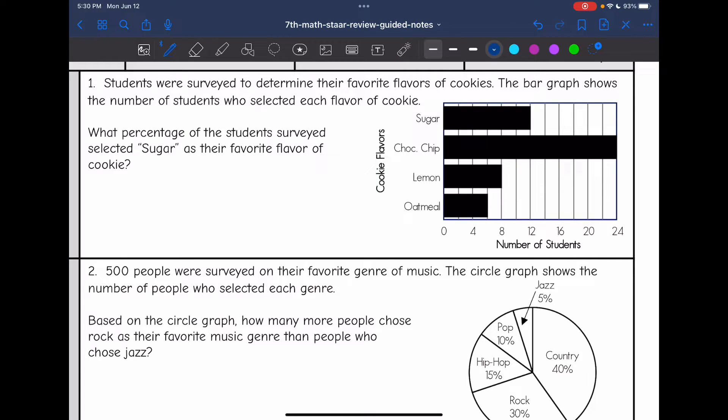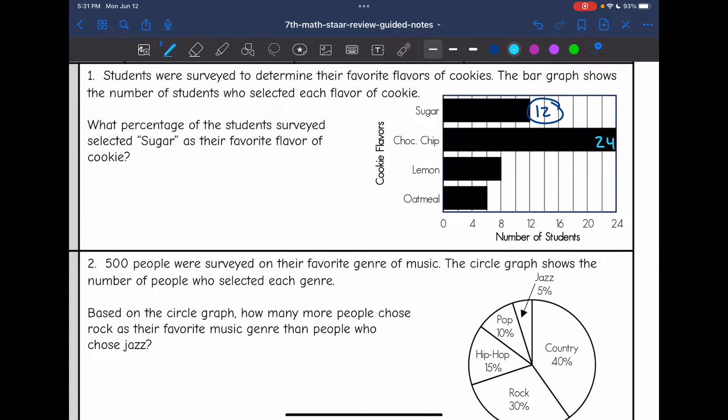So it looks like 12 people selected sugar as their favorite cookie. I don't know what the total was so that I can set up a percent proportion. So I need to figure that out. So there were 12 people that chose sugar. Looks like 24 people chose chocolate chip. 8 people chose lemon.